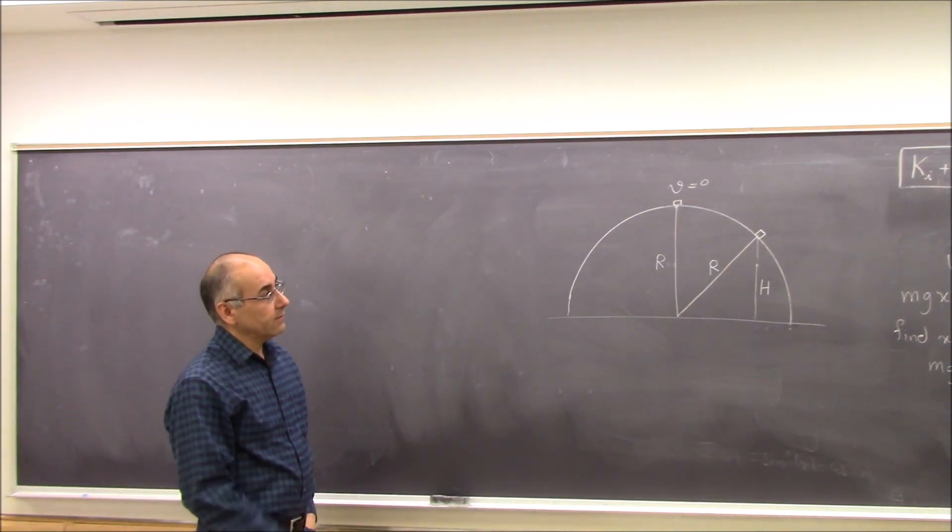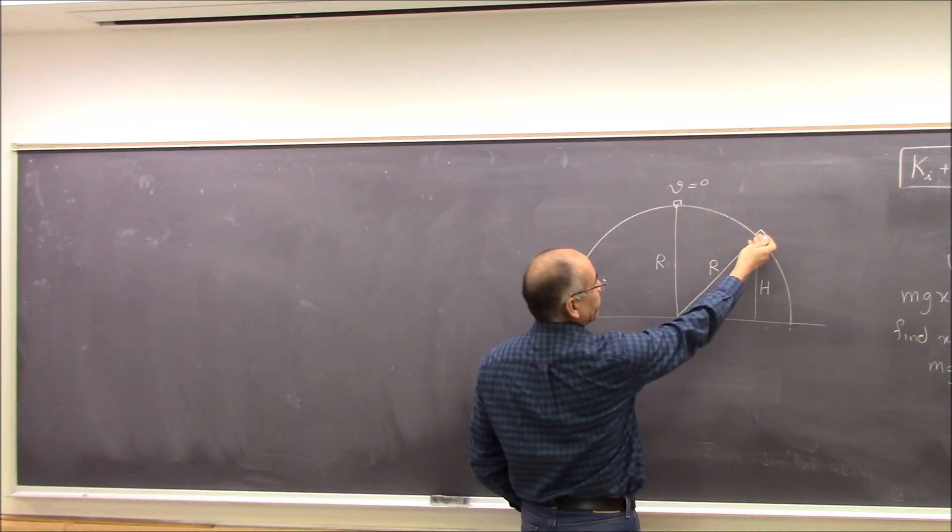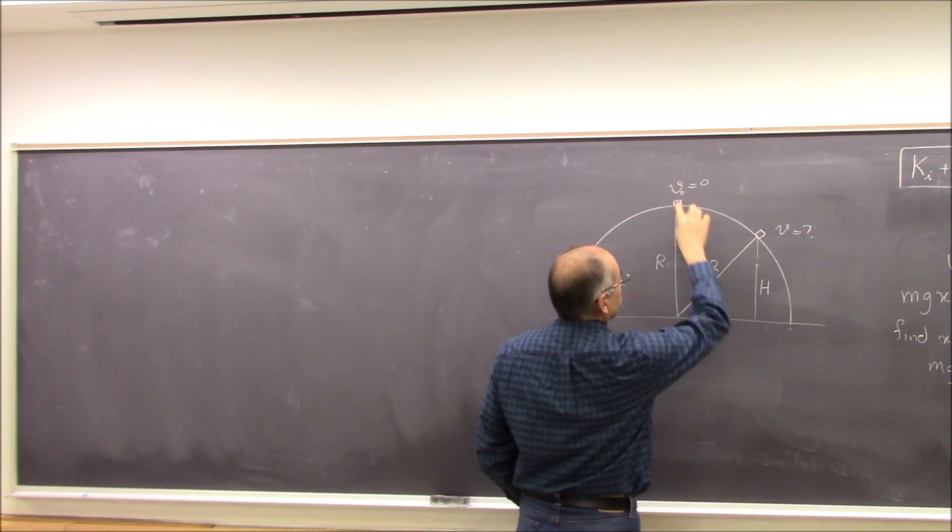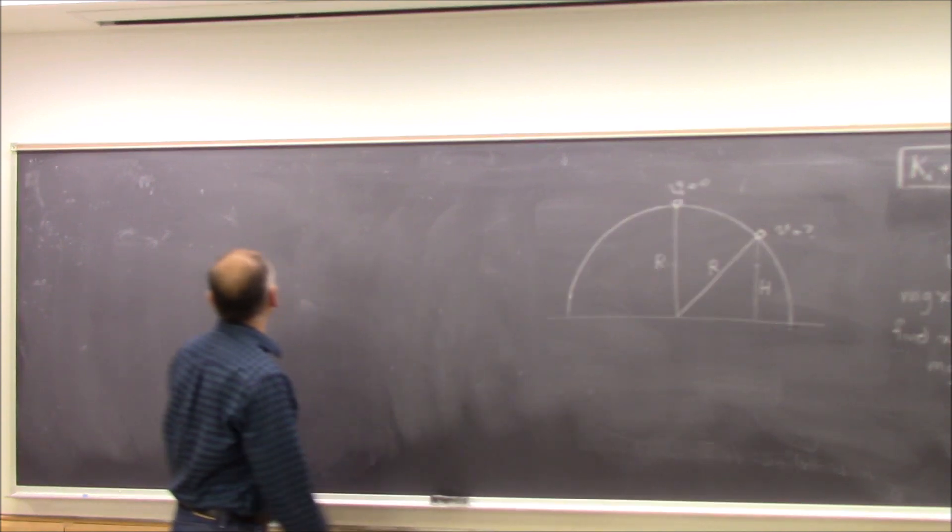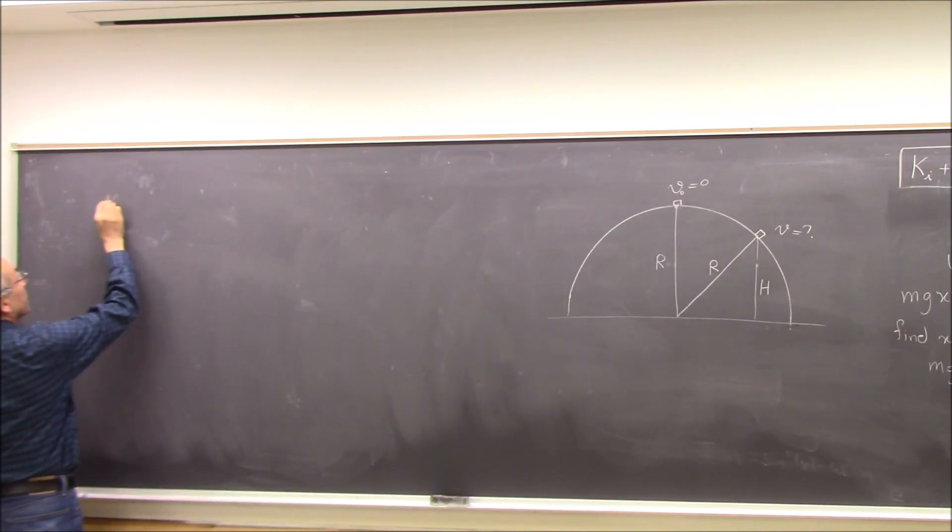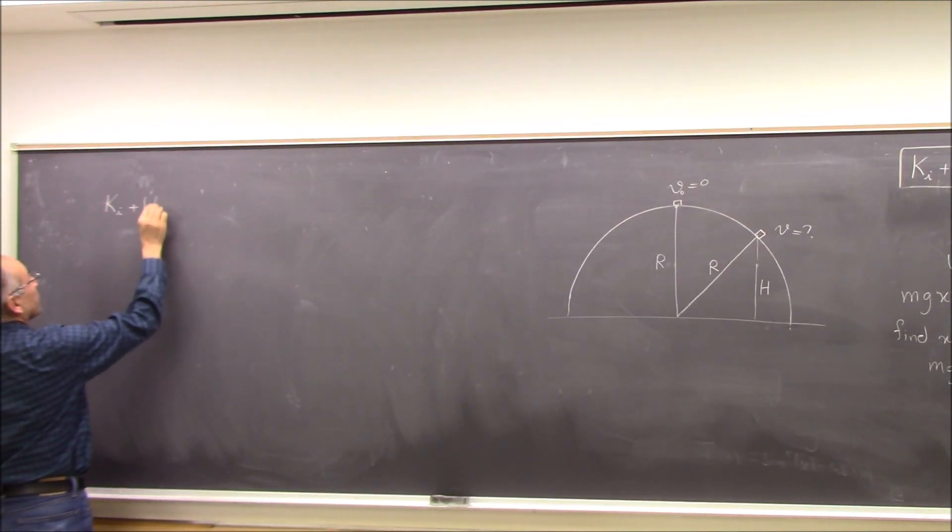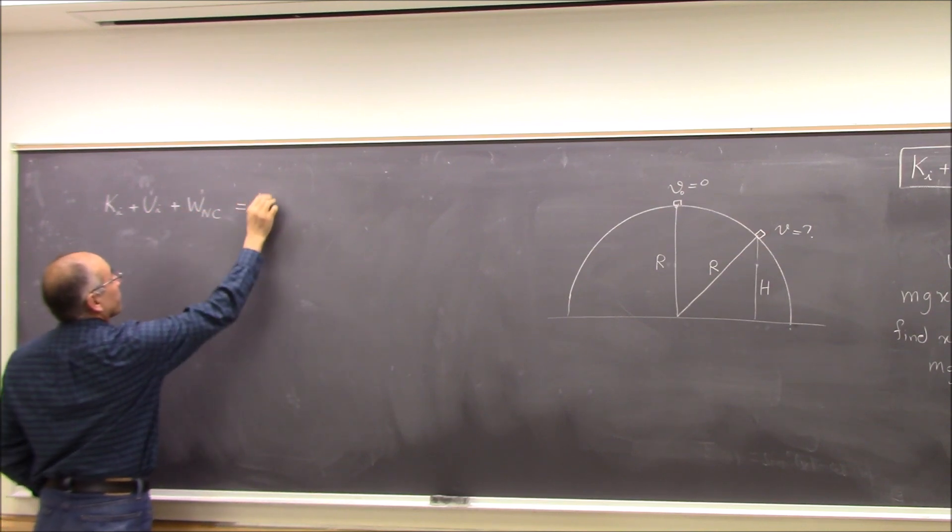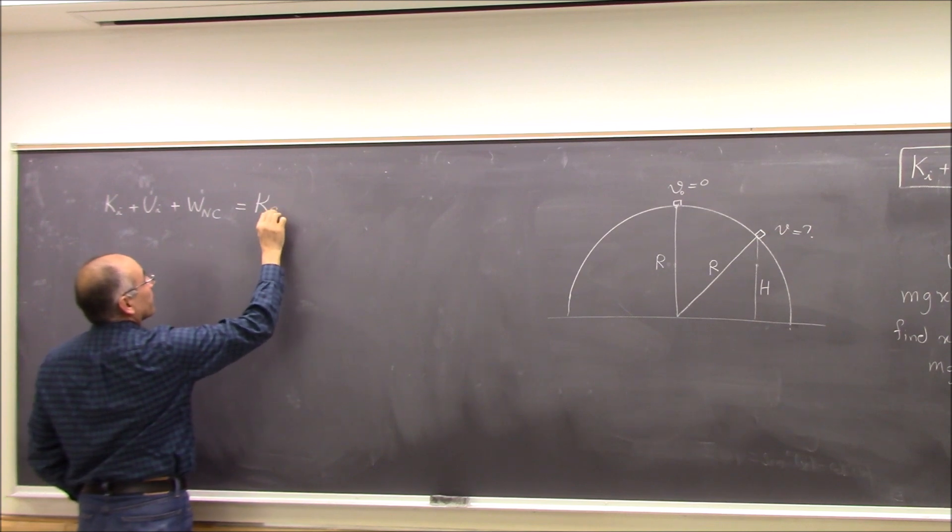So you can use conservation of energy first to find what is the speed here. This is, let's say this is V naught, this is V. So in this conservation of energy, say Ki plus Ui plus W non-conservative equal to Kf plus Uf.